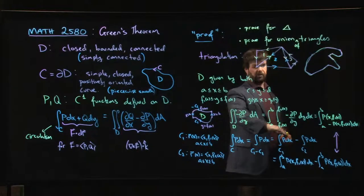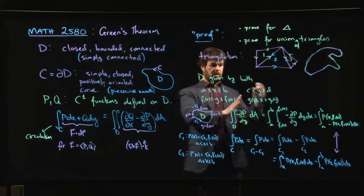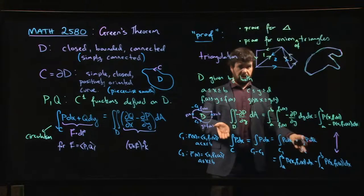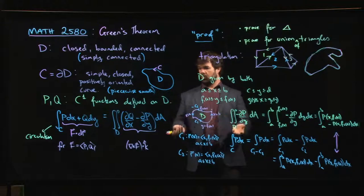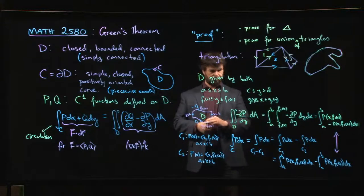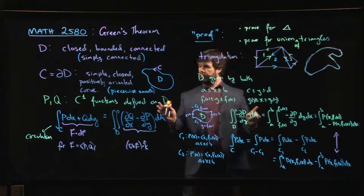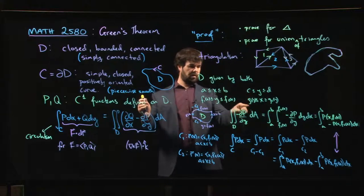then that's when you want to use this description of your region, integrate first with respect to x, right? So integrating with respect to x cancels out the d/dx. You get q evaluating at the two sides. You go through the details, and you get the same thing. And then you put the two halves together as a whole, and you get Green's theorem, right?